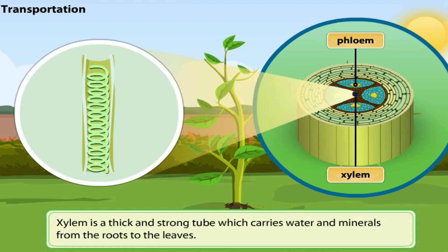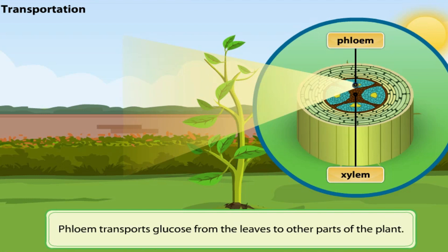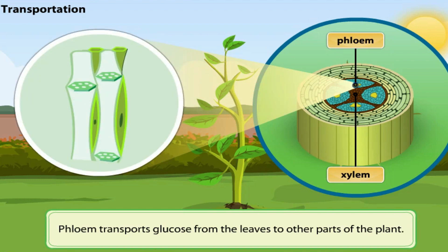Xylem is a thick and strong tube which carries water and minerals from the roots to the leaves. Phloem transports glucose from the leaves to other parts of the plant.